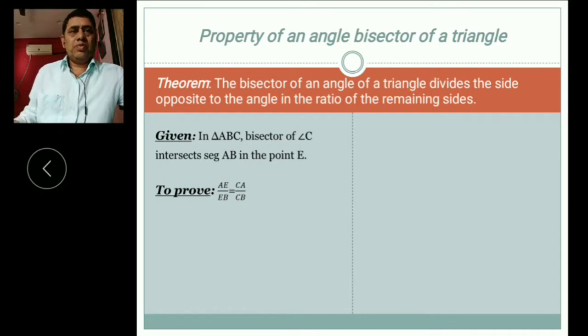Look carefully. There is a triangle. In that, one angle divides, means bisect. From that opposite side of that angle is always dividing into smaller sides.